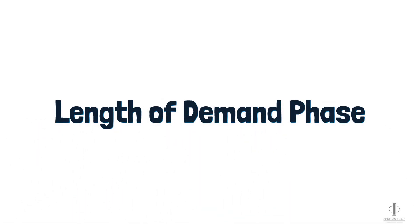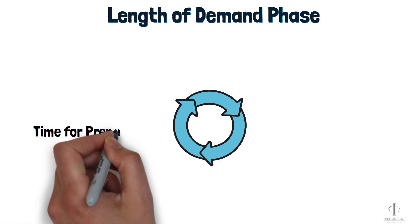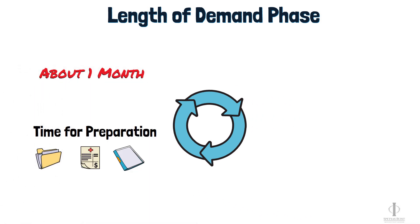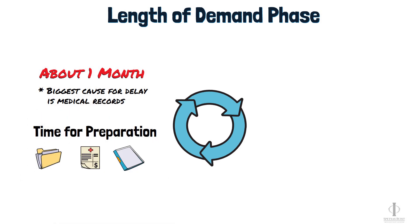Now let's talk about how long the demand phase will last. We'll start by talking about how long it takes to prepare the demand. Once we have all the medical records, the medical bills, and other supporting documents that we need, it usually takes about one month to prepare a thorough, well-crafted demand. However, obtaining complete medical records and final medical bills can cause serious delays. Ultimately, the extent of the delay will depend on the medical provider and when you finish treating with them.